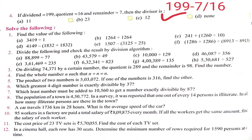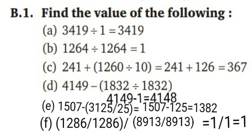Part B: solve the following. First question: find the value of the following. Part A: 3419 ÷ 1 = 3419. Part B: 1264 ÷ 1264 — we are dividing the same number by itself — so the answer is 1. Part C: (1060 ÷ 10) + 241: first solve the bracket, giving 106, then plus 241, so the answer is 367.